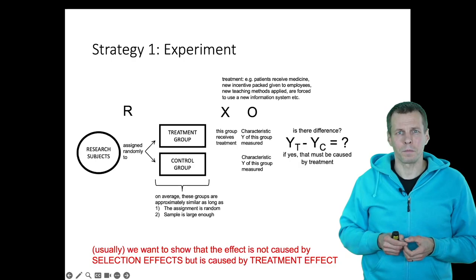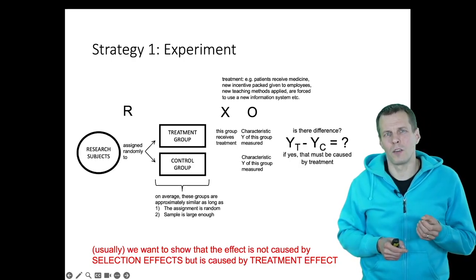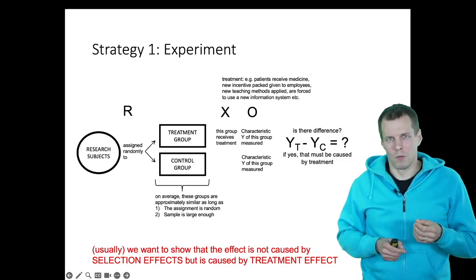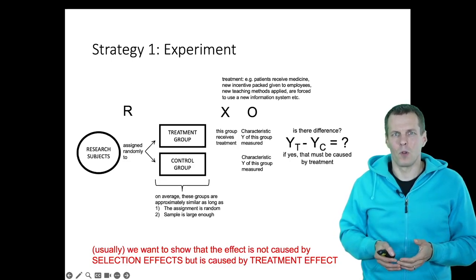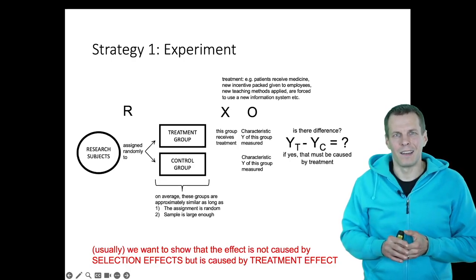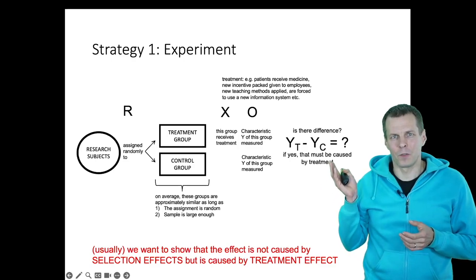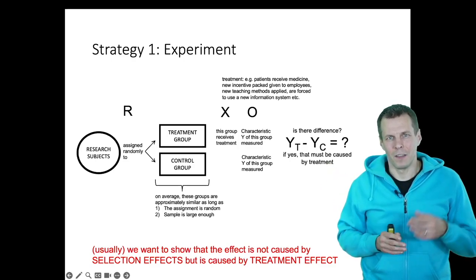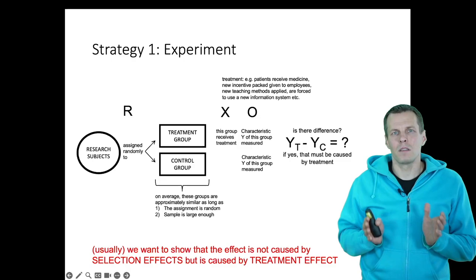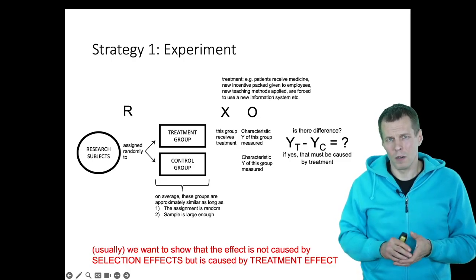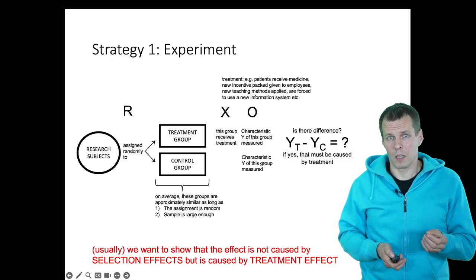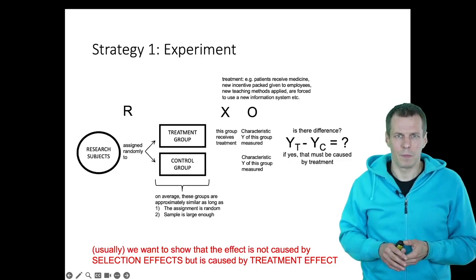Taking this to the medicine example: if we allow patients to choose whether they receive the experimental medication or the placebo, then people whose lives are more at risk might be more likely to choose the experimental treatment. Any difference after treatment wouldn't reflect the treatment effect, but pre-existing differences between the two groups. Experiments are commonly used in organizational behavior research, and less common but present in strategy and entrepreneurship as well.